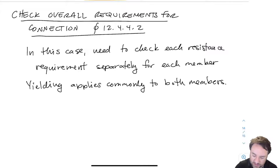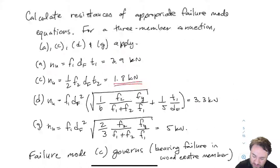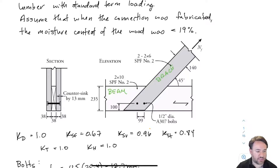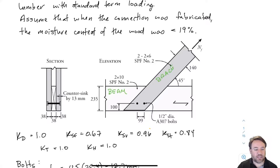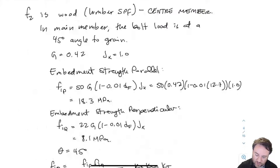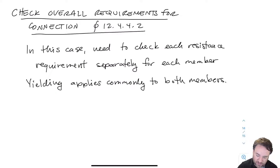In previous videos, we looked at the brace and the beam, and figured out all of the individual resistances for the brace and the beam in parallel-to-grain and perpendicular-to-grain directions for the connection, including row shear, net tension, group tearout, and splitting in the case of the beam. We also looked at our yielding resistance. So now we have all of those resistances compiled together, and we can go ahead and check all of them individually to come up with the total amount of force, nf, that we can apply to this connection, using the overall requirements.